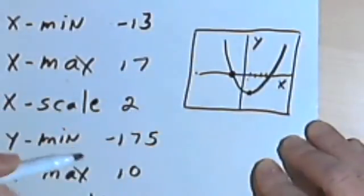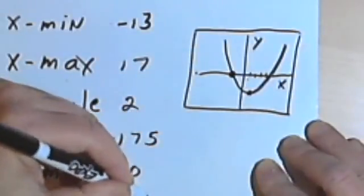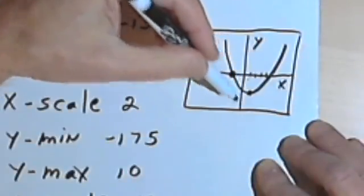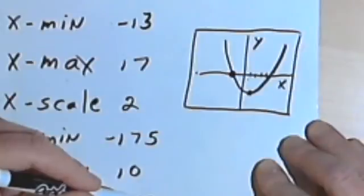So if I've got that much distance, I think I might want to make my y-scale 10. In other words, I'd be counting by 10s, 10, 20, 30, 40, and so on. I could even make it 20 or 25.